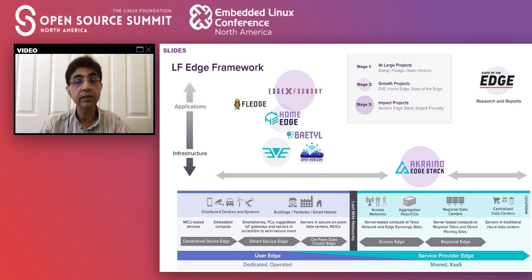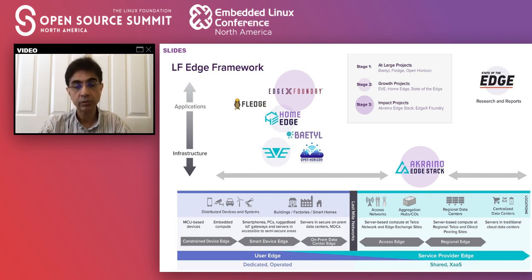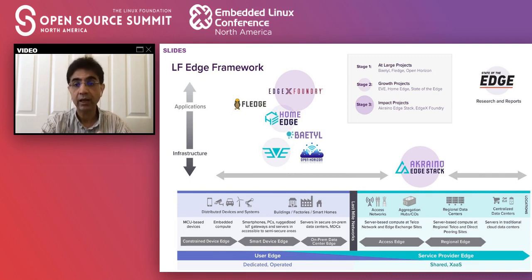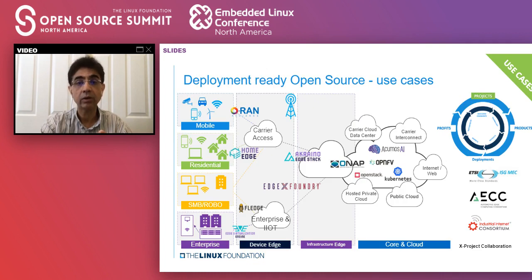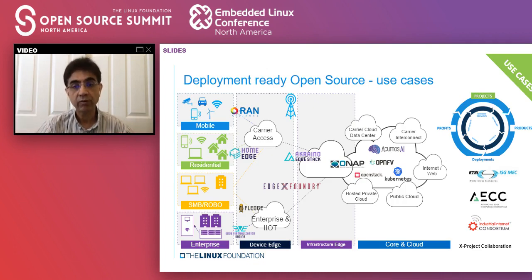We will go in detail on each of these projects, specifically starting with our stage three impact projects — EdgeX Foundry and Acreno — as well as our stage two projects, which we'll get into in the later part of the mini summit. Before we get into that, I want to spend a minute showing you how Edge fits in with the rest of the open source and standards community.